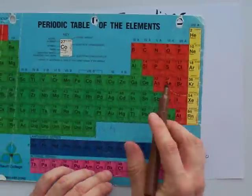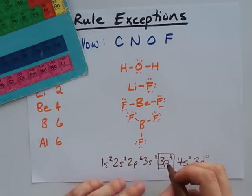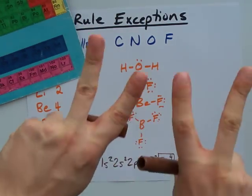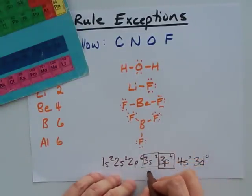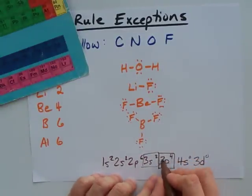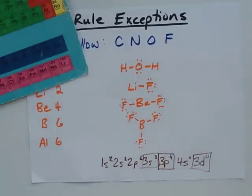What can happen once you get to phosphorus, sulfur, chlorine, argon, is that you can get hybridization, which means that the 3s orbital, all three of the p's, and some of the d's can all combine.